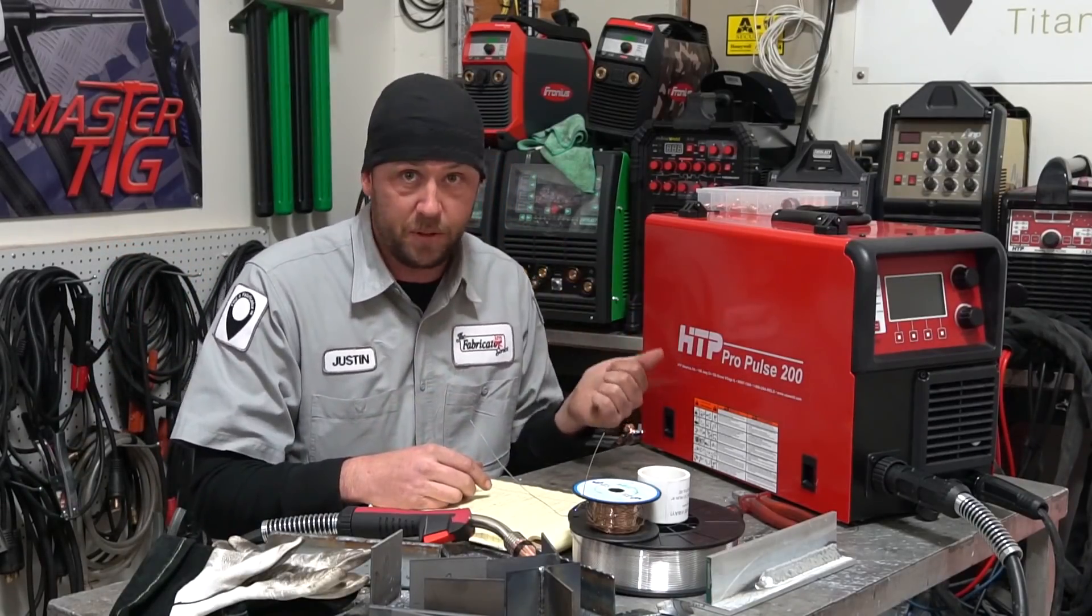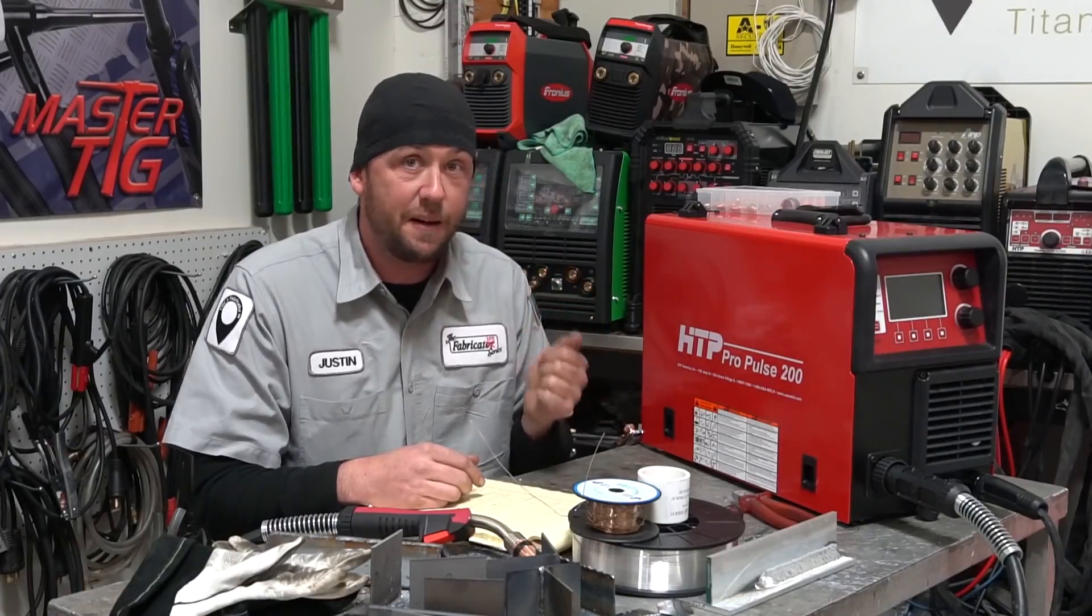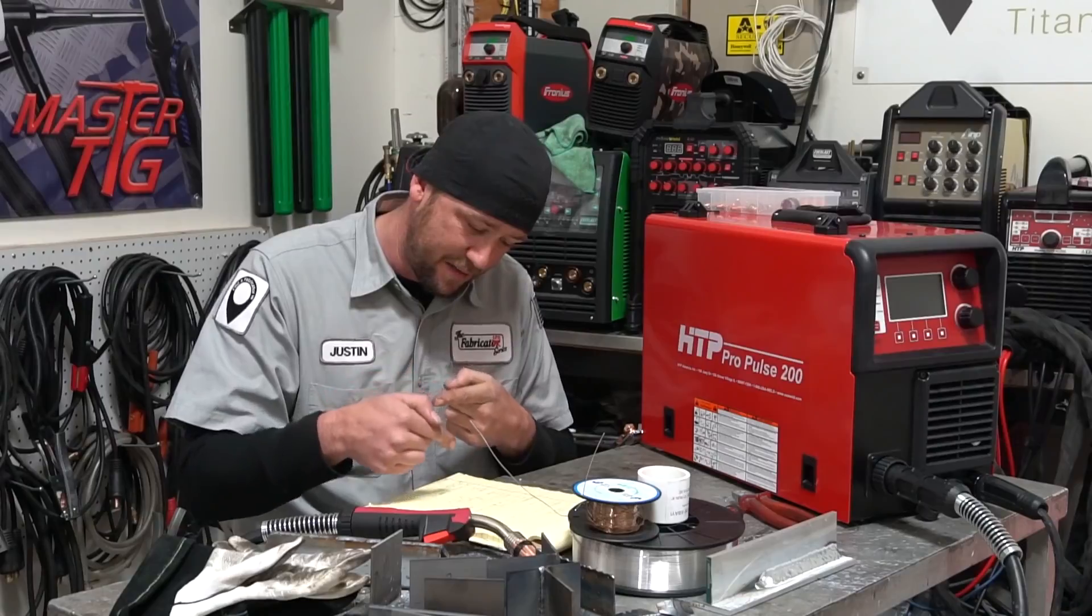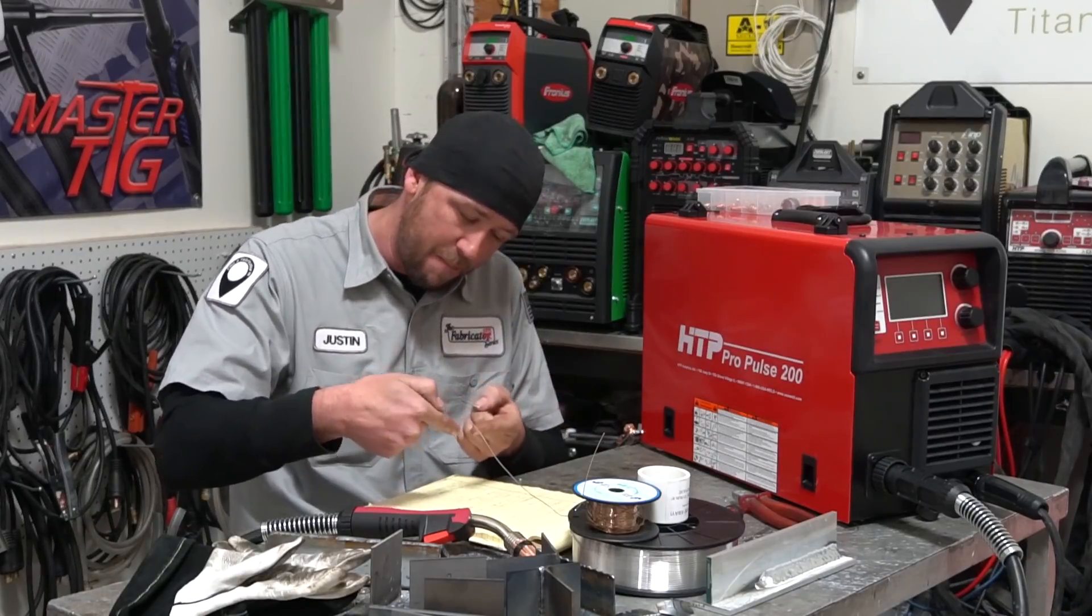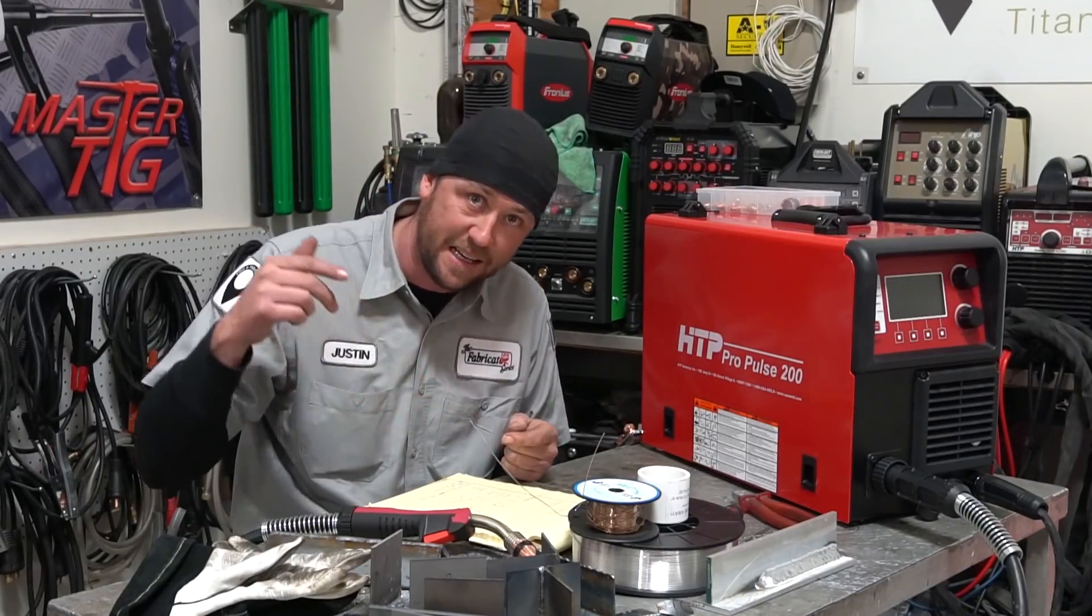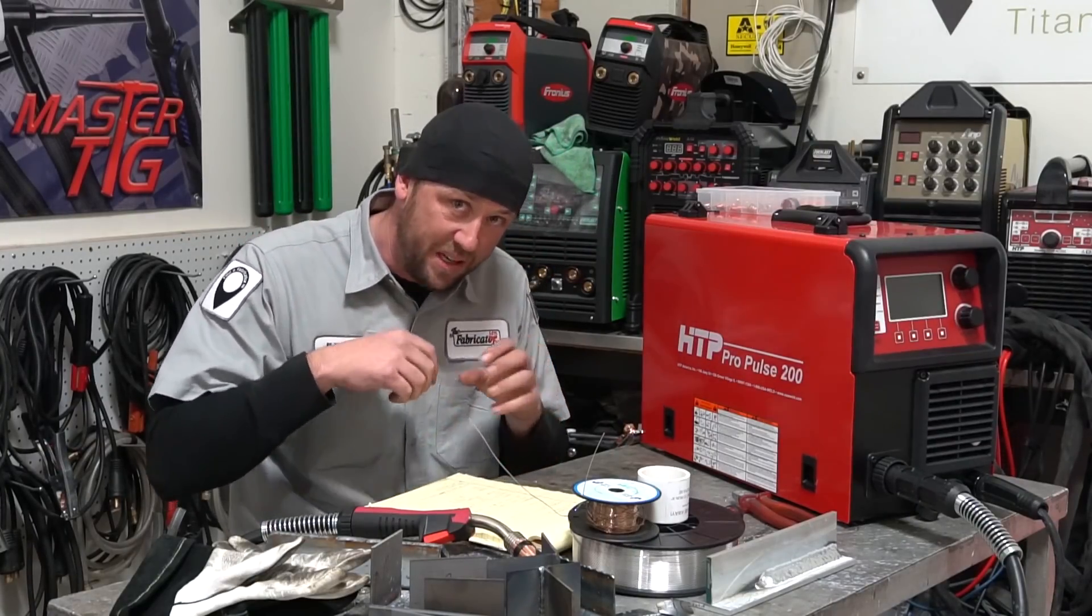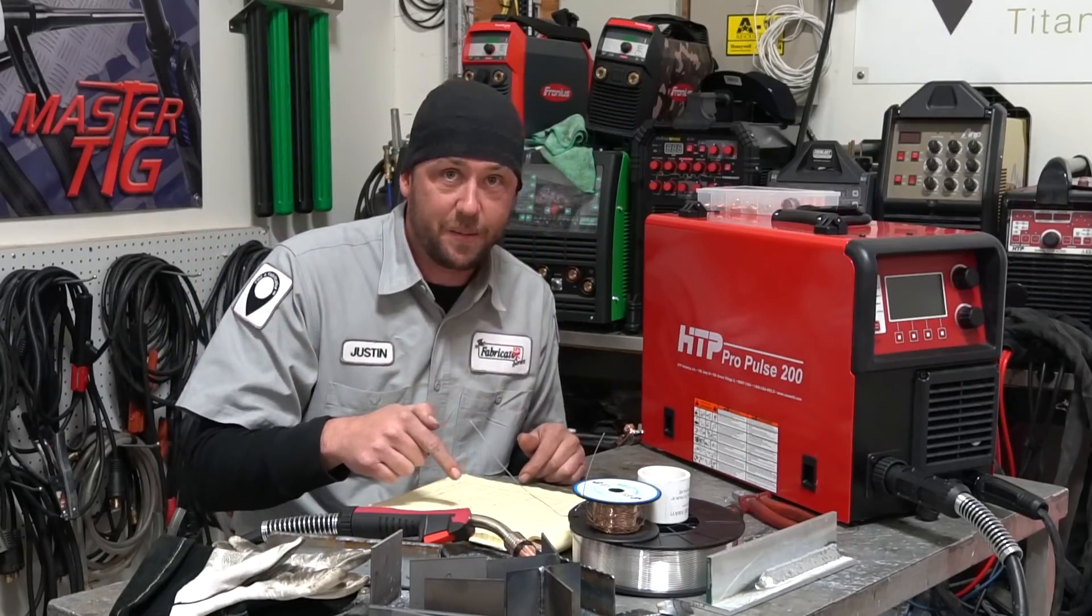We're right in the middle of reviewing the HTP Pro Pulse 200 and some sort of random snafu in my settings on one of the programs allowed the wire to draw back so far and create a huge arc that I can actually see the droplets of wire as they're being vaporized blow out into the puddle.